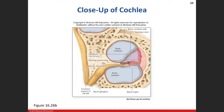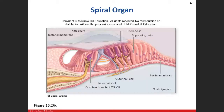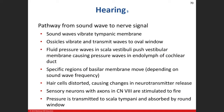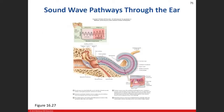Depending on the frequency and amplitude, the pressure waves travel through the scala vestibuli and begin to push on the vestibular membrane, which is the roof of the cochlear duct. That causes distortion and starts to slosh around the endolymph inside the cochlear duct — just like pushing water against the side of a pool creates waves. Those pressure waves move the endolymph around.